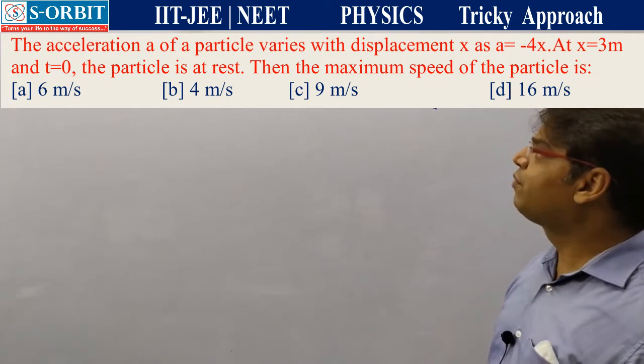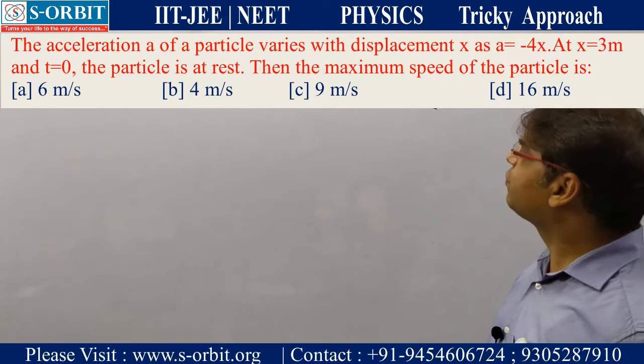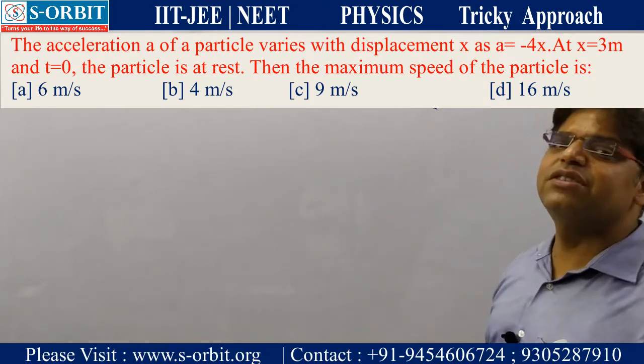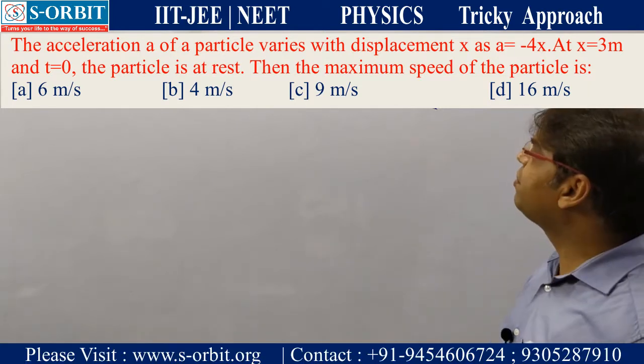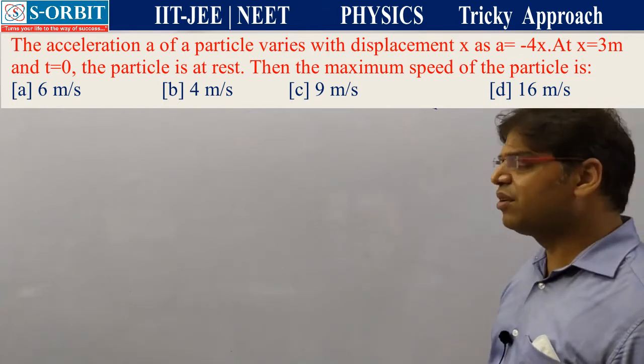Four options: A is 6 meters per second, B is 4 meters per second, C is 9 meters per second, and D is 16 meters per second. This is how we approach tricky methods.